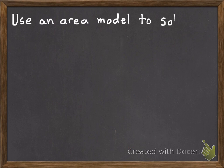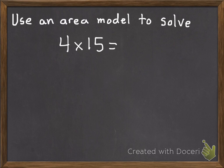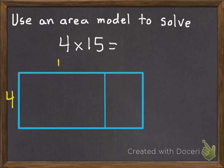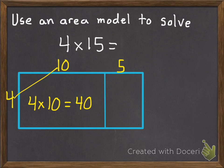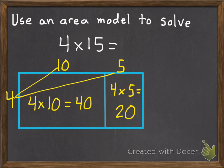Your second practice problem — use an area model to solve 4 times 15. Go ahead and pause. Here's our area model: 4 on the side, break apart 15 into 10 and 5 at the top. 4 times 10 equals 40, and 4 times 5 equals 20. 40 plus 20 equals 60.